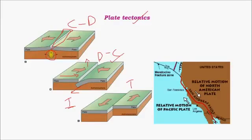At the transform edge, for example the San Andreas fault in western USA, a small part of the mass is moving upward while the mainland American plate is moving downward, giving rise to a fault line. Earthquakes are frequent along this fault line.